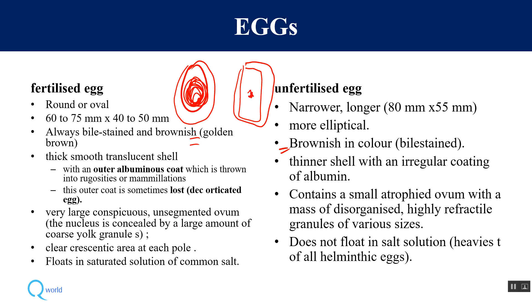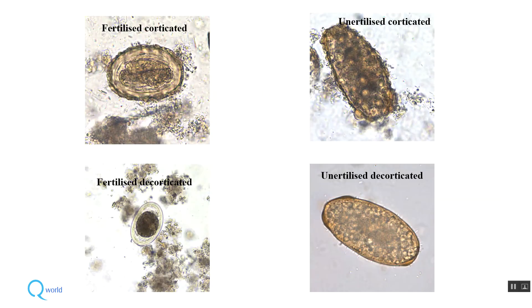A clear crescentic area at each pole can be seen in the fertilized egg, which is a clear space. The fertilized egg floats in saturated salt solution, while the unfertilized egg does not. Looking at the four pictures — fertilized on one side and unfertilized on the other — the terms corticated and decorticated are noted. Sometimes there is an albuminous coat (the wavy line) covering the egg, called corticated; when absent, it is decorticated. This gives us four varieties of eggs.